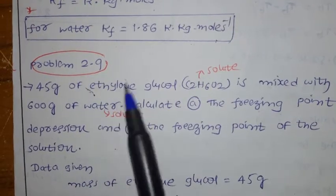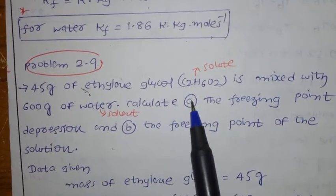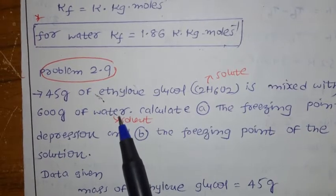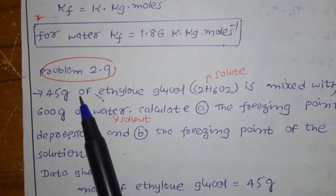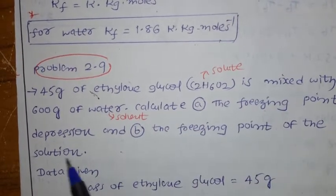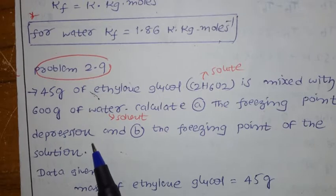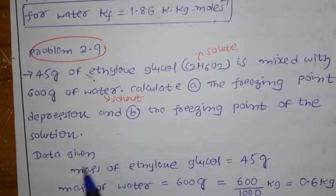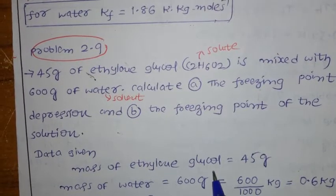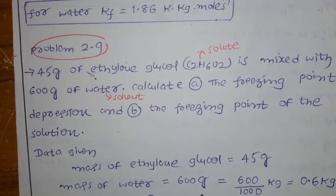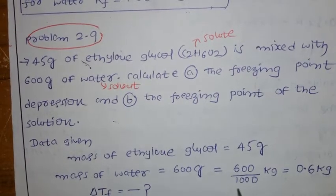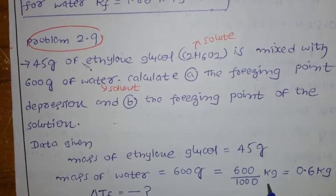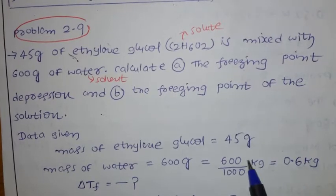Now let us solve problem 2.9 on depression of freezing point. Given: 45 grams of ethylene glycol (C2H6O2) is mixed with 600 grams of water. Water is the solvent (present in larger amount) and ethylene glycol is the solute. We need to calculate the freezing point depression ΔTf and the freezing point of the solution Tf. Mass of ethylene glycol = 45 g; mass of water = 600 g = 0.6 kg.